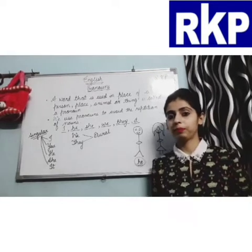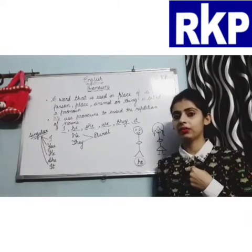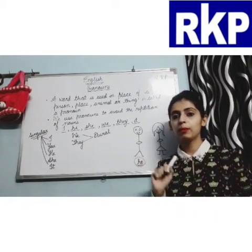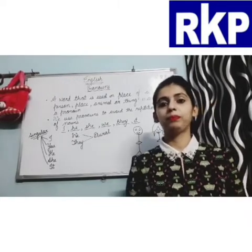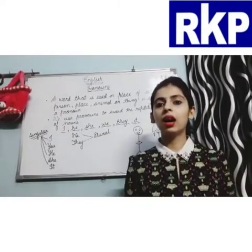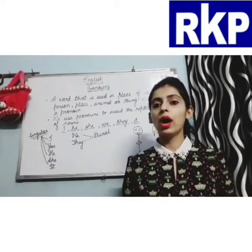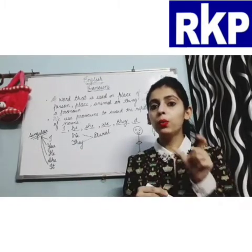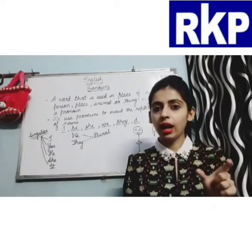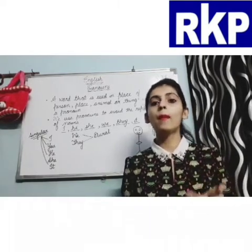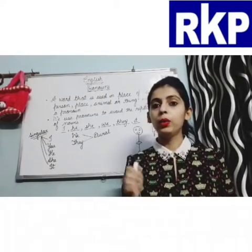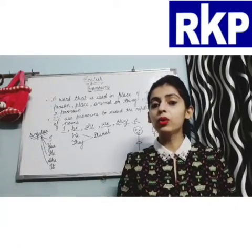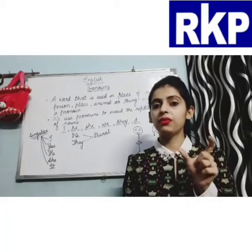Now if I am talking about these people including myself, then the pronoun 'we' will be used. For example: I, Meera, Tanu, Priya are going to the park. In the next sentence I would say: We will play badminton there. So 'we' is used to specify all of us together.